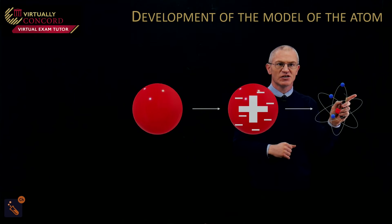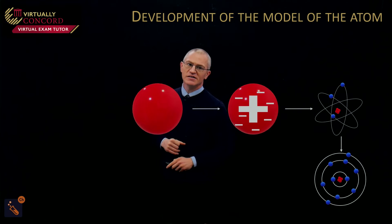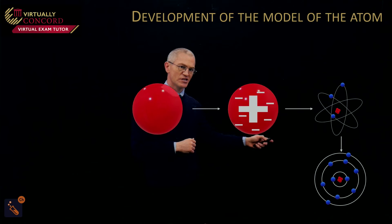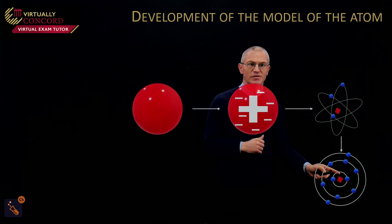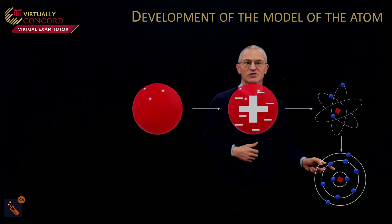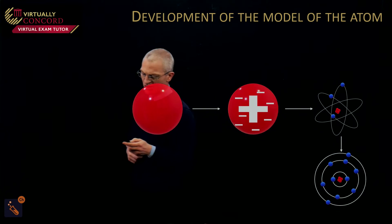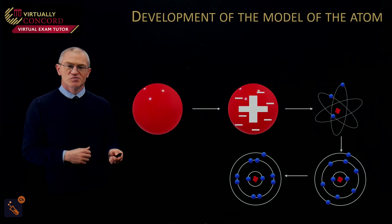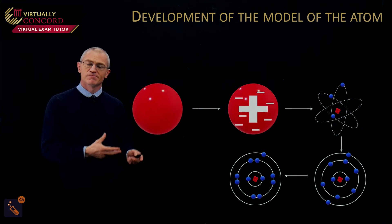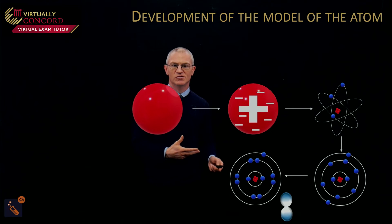Looking at Rutherford's model, there's lots of empty space, a very densely packed positive nucleus, and electrons going around the outside. Then there's Bohr's model, where he established shells using emission spectra — electrons jumping up to the next energy level and falling back down. You can see the nucleus and the energy levels here, which is starting to look like the atomic structure we know today. De Broglie and Schrödinger's wave-particle duality then led to atomic orbitals.